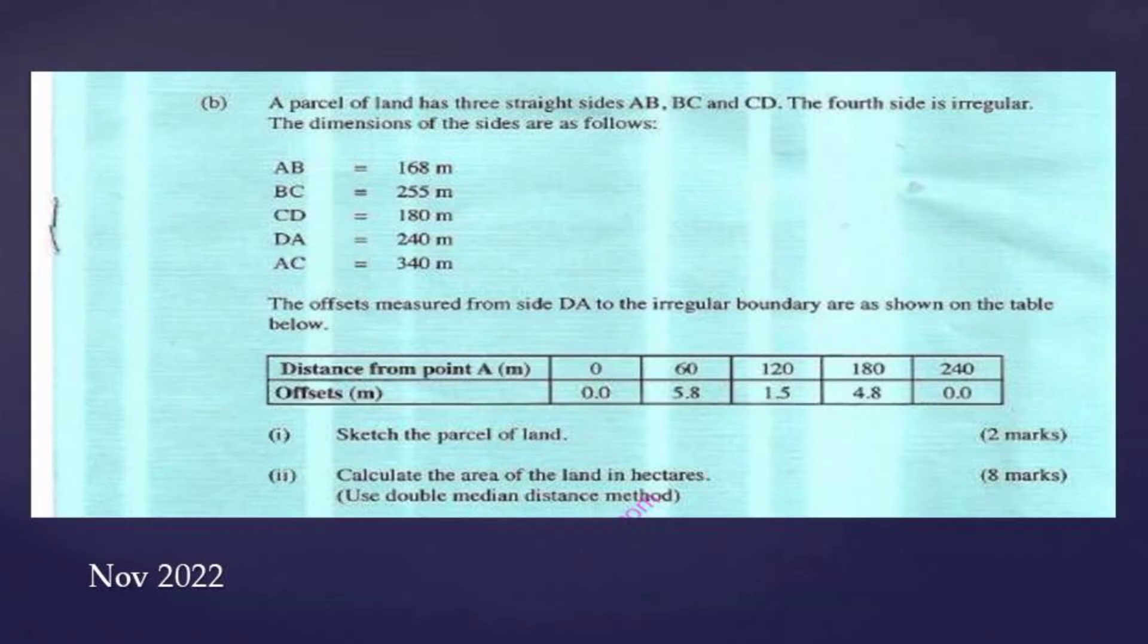In the question paper, that is question number 6B. A parcel of land has three straight sides AB, BC, and CD. The fourth side is irregular. We can see we have been shown our calculations.